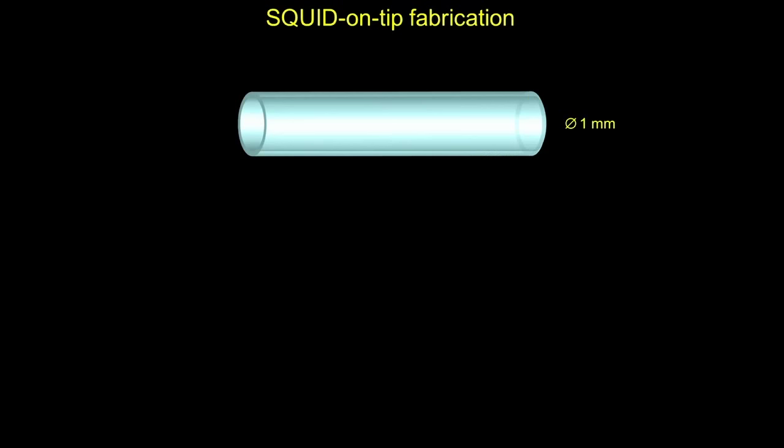What is an even more severe limitation is that these planar devices are very hard to bring to less than half a micron to the surface and scan them above it. So we have taken a different approach. I will tell you how we make our SQUIDs on tip, then give you some examples of nanomagnetism, and eventually show you some more advanced devices we've been recently making.